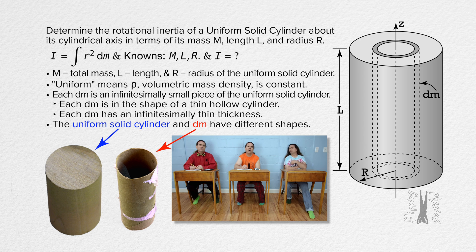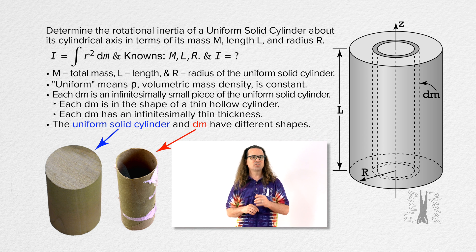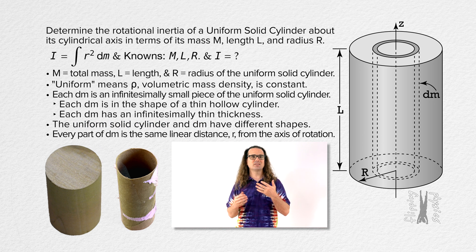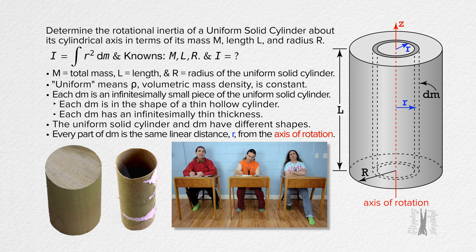Why did we choose dm to be a thin hollow cylinder and not a solid cylinder? The reason dm is in the shape of a thin hollow cylinder is so that every part of dm is the same linear distance r from the axis of rotation. I can see how every location on dm is located the same distance lowercase r from the axis of rotation.